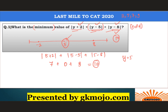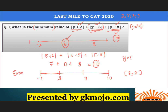Now you might ask: what if the number of modulus terms is even? Suppose we have four values on the number line — say −1, 3, 7, and 10. In that case the minimum value of the expression holds for all values of y from 3 to 7, inclusive. So you can take any value in that range, including 3 and 7 itself, and the expression will yield the minimum value.